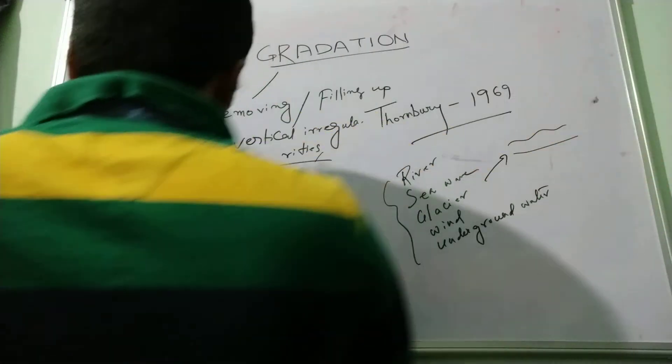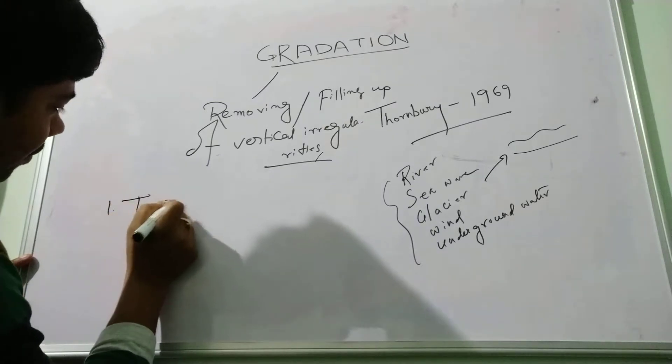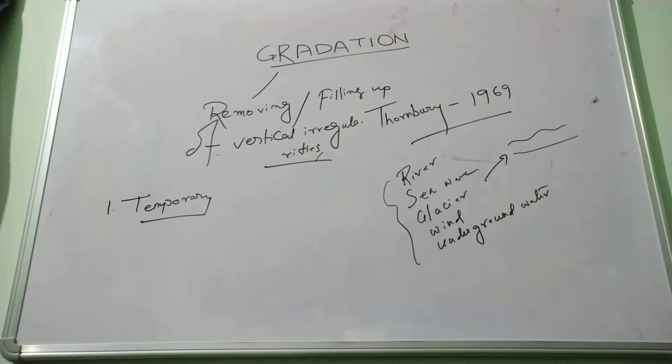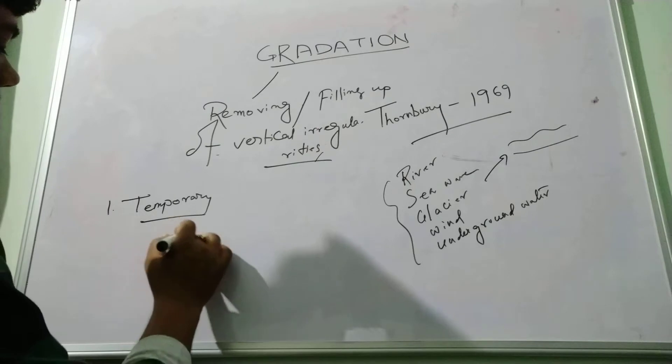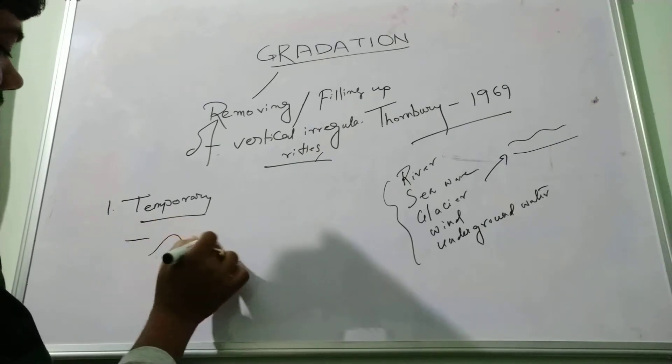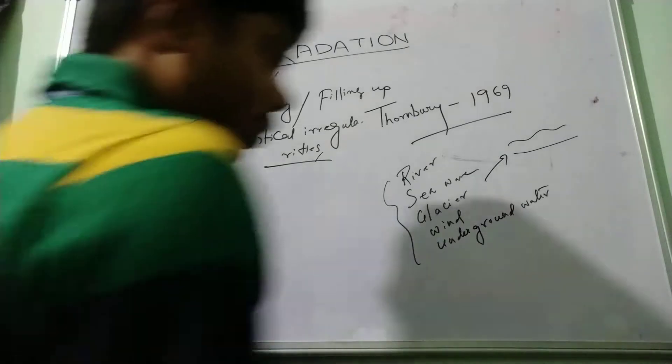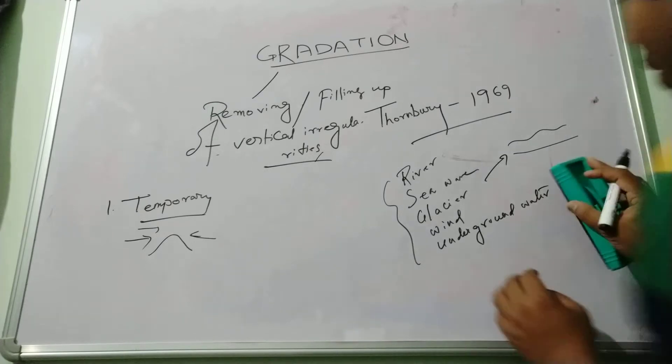Another important characteristic of this graded surface is that it is temporary because the moment any part emerges, the erosion process becomes active. So suppose there is deposition; in the same way, the erosion process also starts. So graded surface becomes a temporary condition.